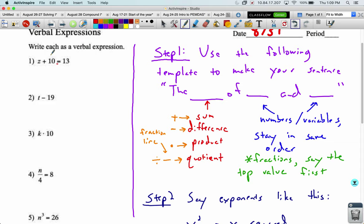But that's not what we want. We want this bit of math written out with words. So I see an addition. Addition means sum. So the sum of, and then we say the two numbers slash variables in order, the sum of z and ten is equal to thirteen.